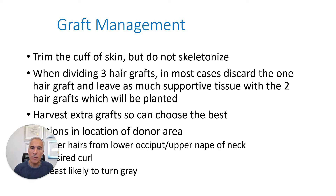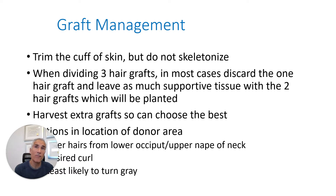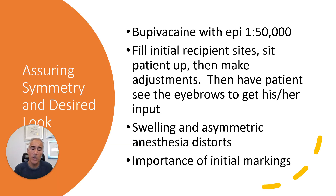With graft management, we trim the cuff of the skin but you don't want to skeletonize the graft. With FUE, there are commonly three-hair grafts. In most cases, we will discard the one-hair graft and leave as much supportive tissue with the two-hair grafts. However, if we need more single-hair grafts, we'll dissect and divide the one- and two-hair grafts, so we have a little more density around the single-hair graft with a little more supportive tissue, and the two-hair will be a little thinner. We harvest extra grafts so we can choose the best. Priorities include ideally a slight curl, least likely to turn gray, and density — those are all factors in determining the donor area.